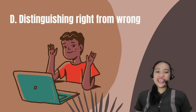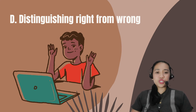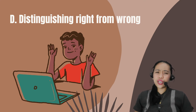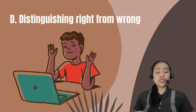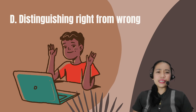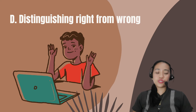The correct answer is Letter D. A 2-year-old child is learning what is right and what is wrong. Scolding him when he utters bad words is not a good practice, since he might consider it as an approval of his or her behavior.